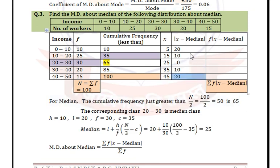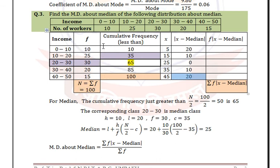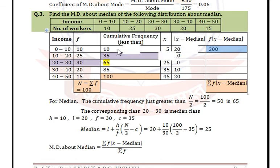Now we multiply each absolute deviation by the corresponding frequency: 10×20 = 200, 25×10 = 250.